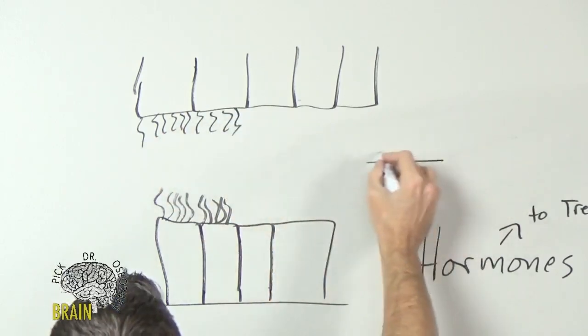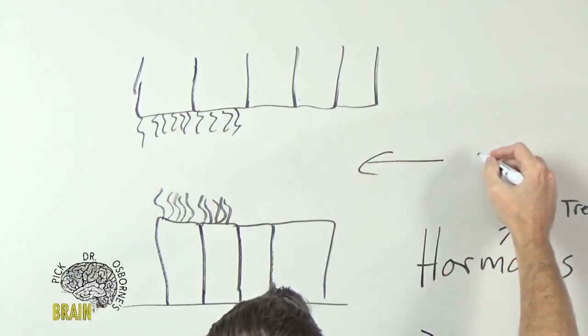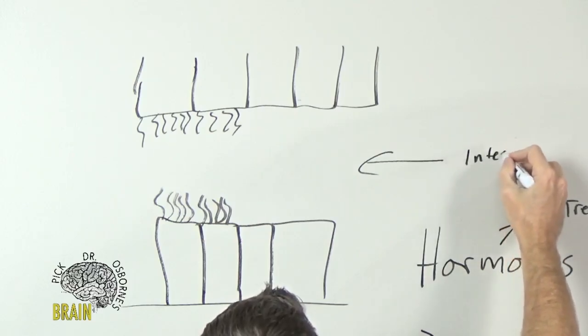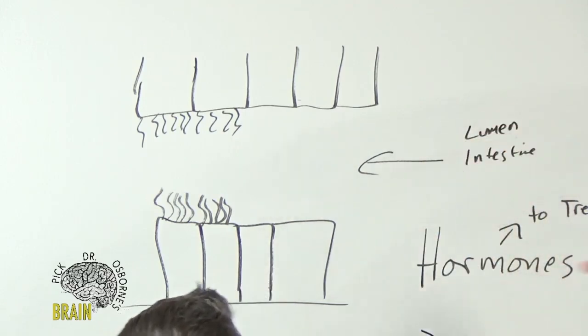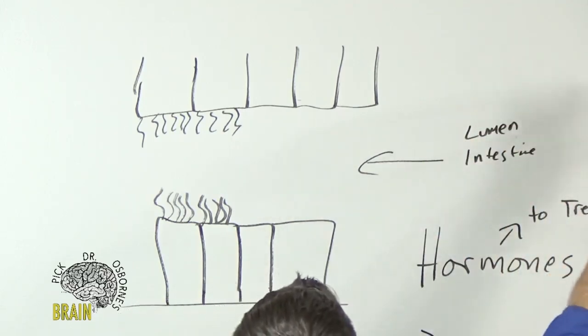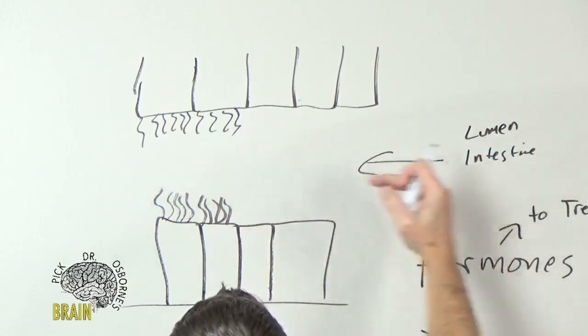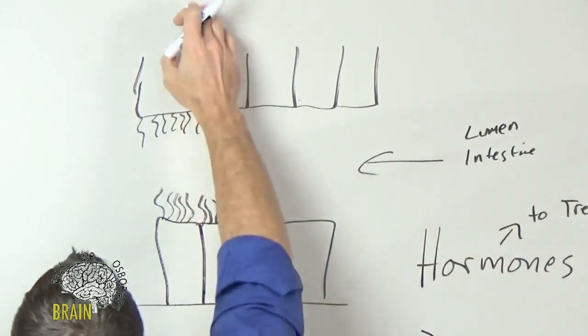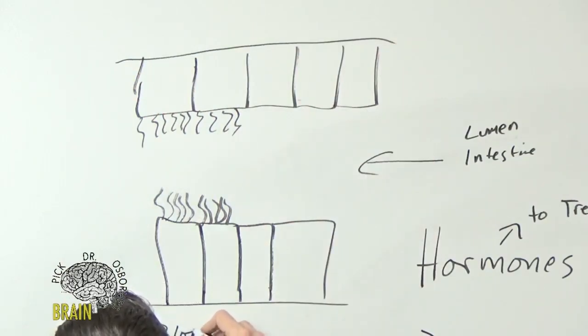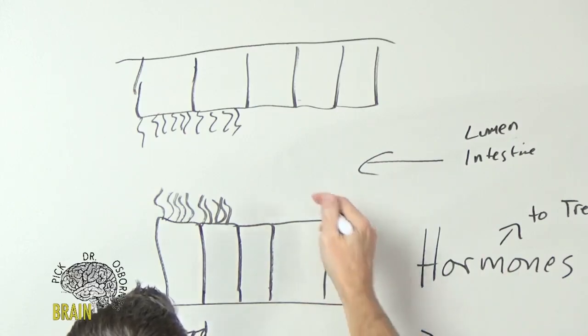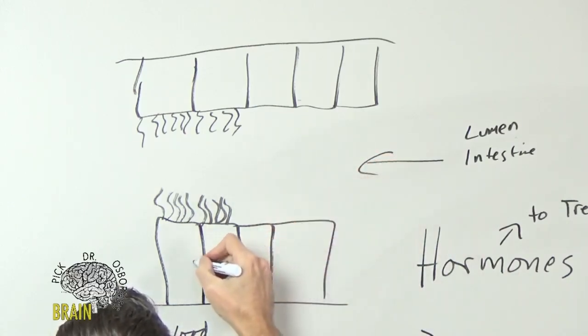This is the lumen or the tube of the small intestine. Food is coming down through the tube from your mouth. On either side of the basal membrane you have the bloodstream, which goes to your liver through your portal circulation. Food comes through, and you have these proteins that anchor the cells together.